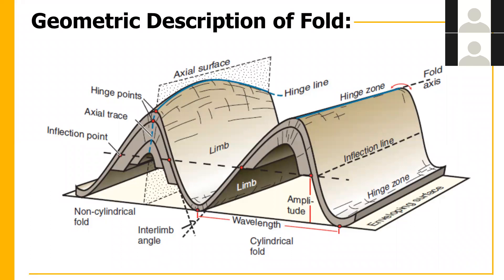After the hinge zone, we have the inflection point — it is exactly in the middle of the limb. The inflection point is a point of zero curvature, where the fold has no bend. You can see that at this point the limb is almost straight — it has no curvature — so this is the inflection point.